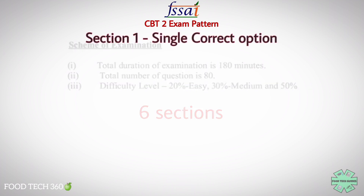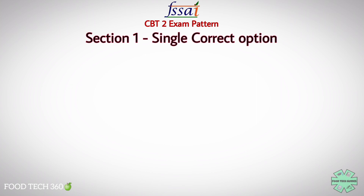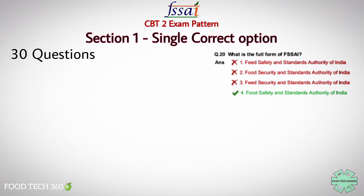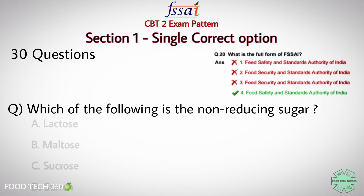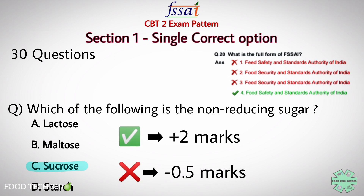Section 1 is Single Correct Option — a total of 30 questions will be asked from this section. This is nothing but the normal MCQ type questions, same as in CBT 1. They will give four options and you have to choose one correct option. For example: 'Which of the following is the non-reducing sugar?' Options: A) Lactose, B) Maltose, C) Sucrose, D) Starch. The correct answer is C — Sucrose. Selecting the right option gives you plus 2 marks; wrong answer gives minus 0.5.